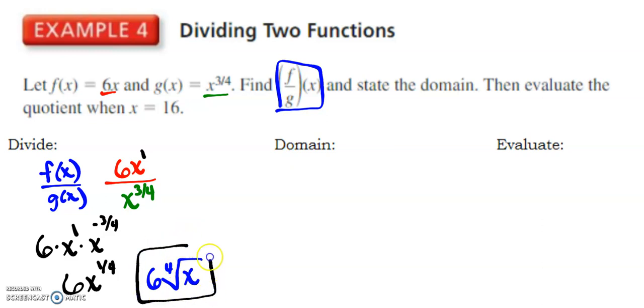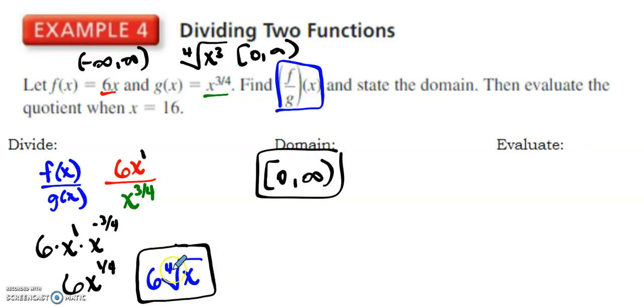All right, so let's talk about domains. The domain of our f(x) is going to be from negative infinity to infinity because we just have a line. And our g(x), remember this is really the 4th root of x³. And when we take the 4th root of something, we can only have positive inputs, because otherwise we end up with imaginary answers. So when I put these two together, the one that's more restrictive is the one that goes from 0 to infinity.